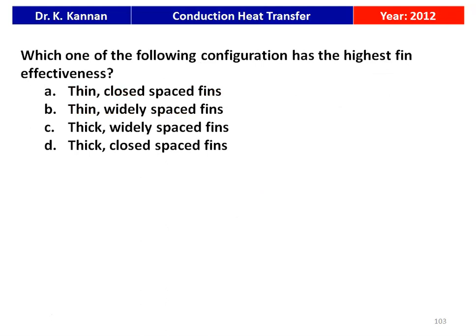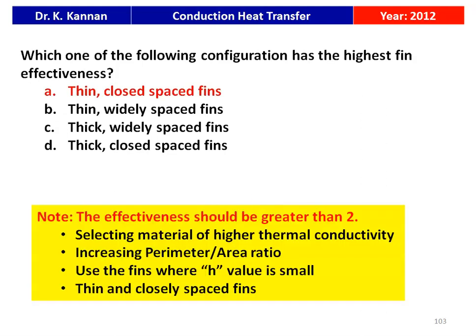Which fin configuration has the highest effectiveness? The answer is thin fin closely spaced. Fin effectiveness should be greater than 2. Higher effectiveness is achieved by selecting material of higher thermal conductivity, increasing the perimeter-to-area ratio — which corresponds to thin closely-spaced fins — and using fins where the heat transfer coefficient H is smaller. From the given options, thin and closely spaced is the correct answer.